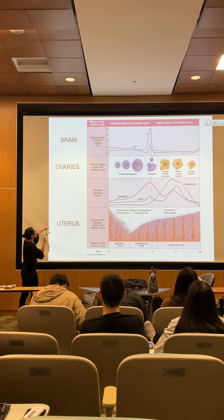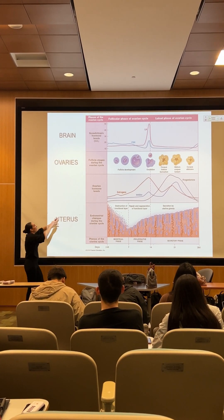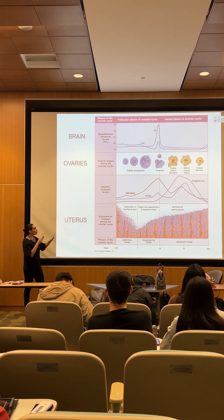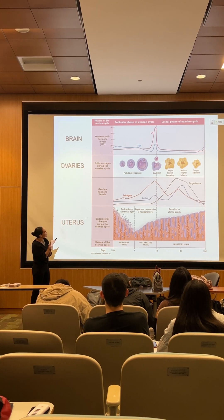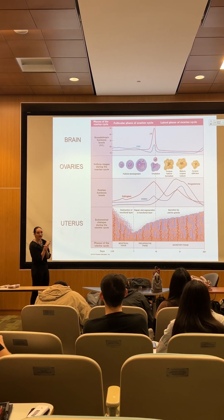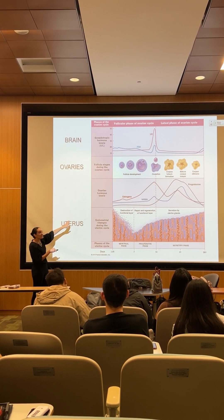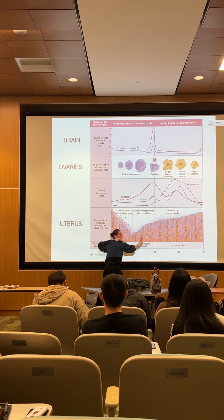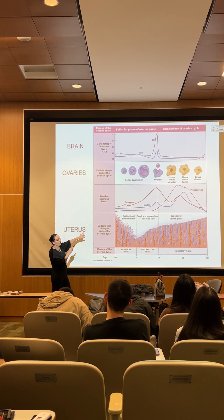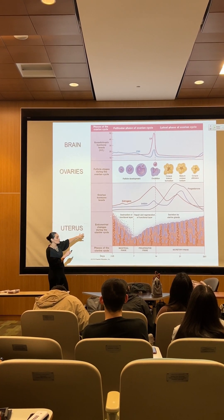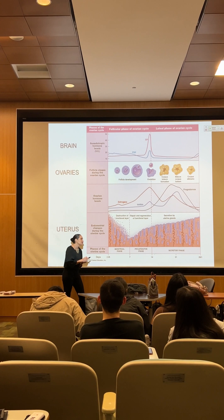So you have two cycles: the ovarian cycle happening in the ovary, and the uterine cycle happening in the uterus. The brain controls the ovaries; the ovaries control the uterus. When the follicle with the egg inside is growing, that's called the follicular phase of the ovarian cycle. Since the egg is just maturing at that point, that is the time to make the inner lining of the uterus fresh. The follicular phase of the ovarian cycle matches with the menstrual phase — when you lose all the inner lining — and then with the proliferative phase, when the inner lining starts to rebuild.